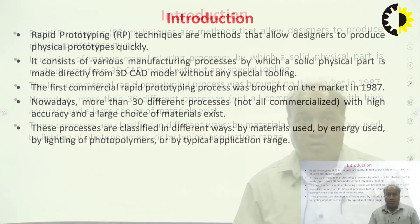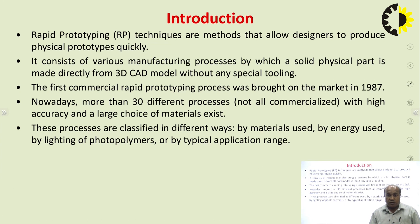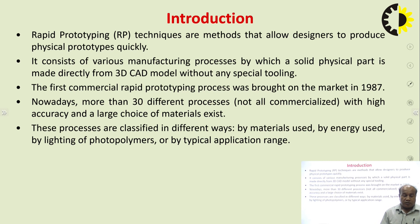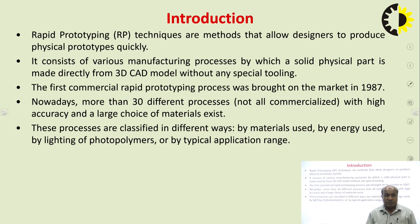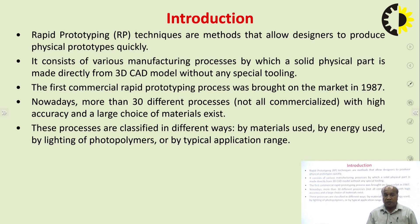Rapid prototyping techniques are methods that allow designers to produce physical prototypes quickly. It consists of various manufacturing processes by which a solid physical part is made directly from a 3D CAD model without any special tool. The first commercial rapid prototyping process came on the market around 1987. Nowadays more than 30 different processes exist, not all commercialized, with high accuracy and a large choice of materials. These processes are classified in different ways: by material used, by energy, by lighting or photopolymers, or by typical application range.